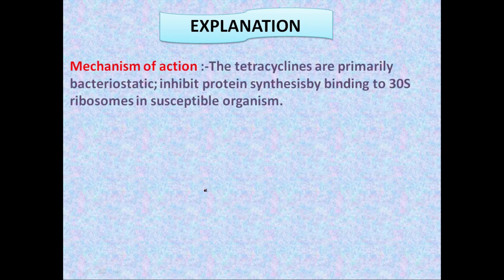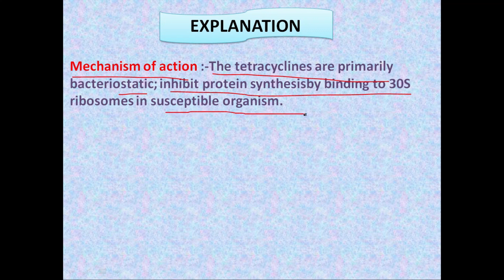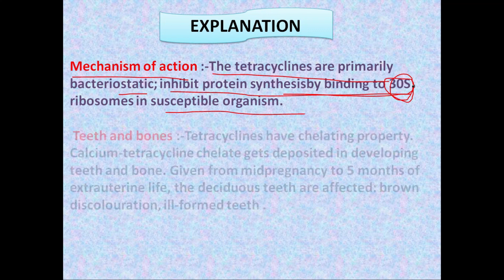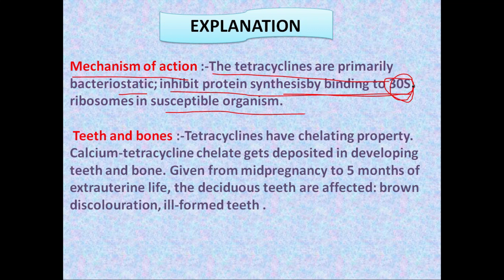Tetracyclines are primarily bacteriostatic and inhibit protein synthesis by binding to the 30S ribosome in susceptible organisms, inhibiting growth. It is very important to note down the mechanism of tetracycline — it inhibits protein synthesis and binds to the 30S subunit — and also how it affects teeth and bones.